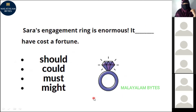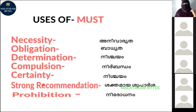Next question: 'Sarah's engagement ring is enormous. It have cost a fortune.' Options: should, could, must, might. The answer is 'must have cost.' Why must? Because the ring is enormous, it implies it is expensive — that's a deduction, expressing certainty. 'Must' expresses necessity, obligation, determination, compulsion, certainty, strong recommendation, and prohibition. Here it shows certainty. That's correct.